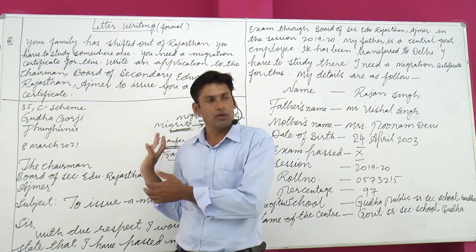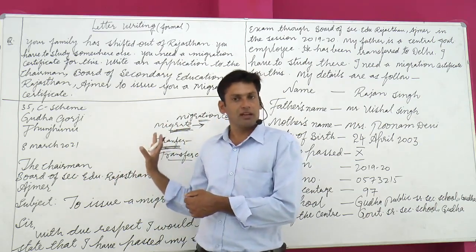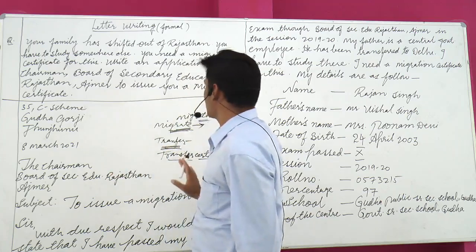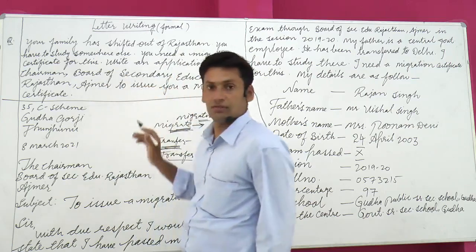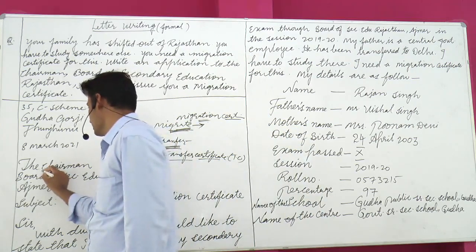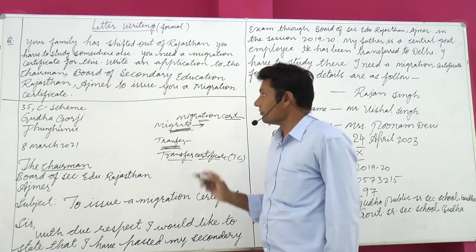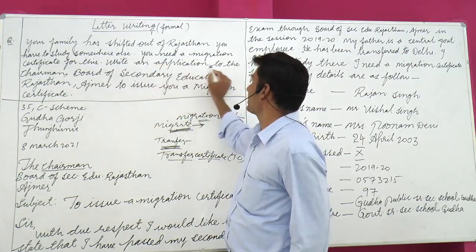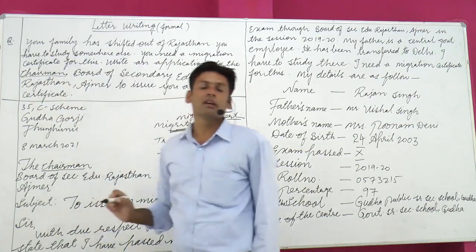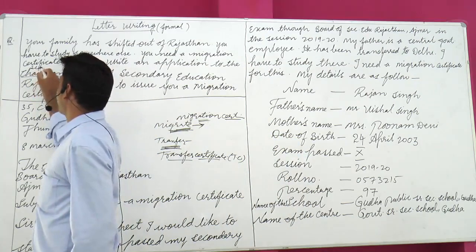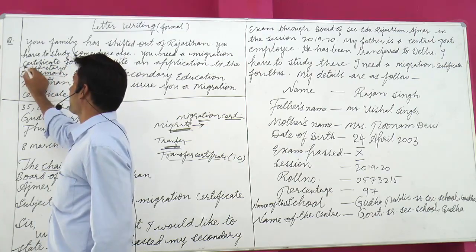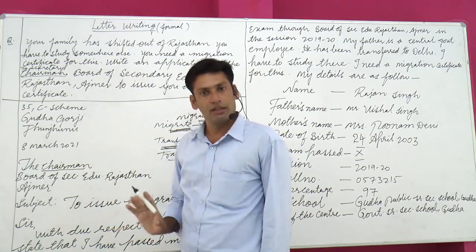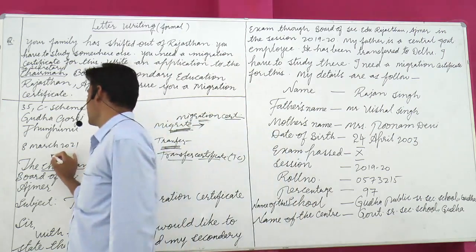This application is an official letter. The chairman is the head of the board. The question may specify writing to the Chairman or the Secretary — write accordingly. 'Secretary' means the board's secretary. Whatever the question specifies, write accordingly. The letter is addressed: to the Chairman (or Secretary), Board of Secondary Education, Rajasthan, Ajmer.